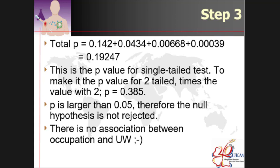So this is the P value for the single tail test. To make it a value for the two tail, you have 2 times 2, so it becomes the P value of 0.385. 0.385 is larger than 0.05. Therefore the null hypothesis is not rejected. There is no association between occupation and the risk of being underweight.